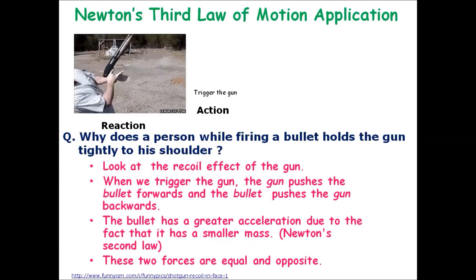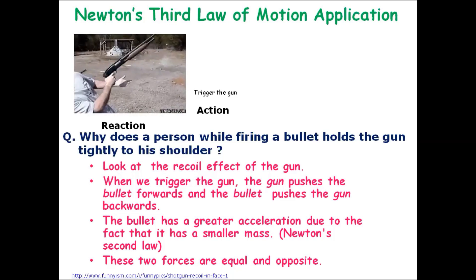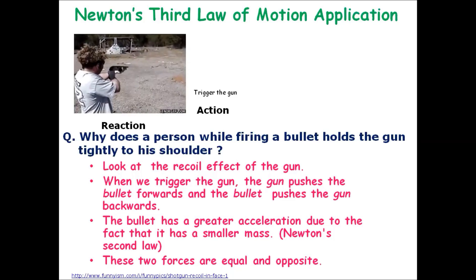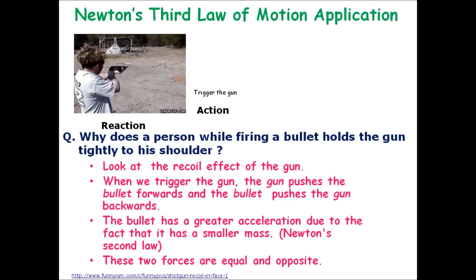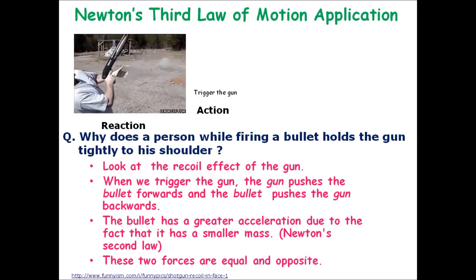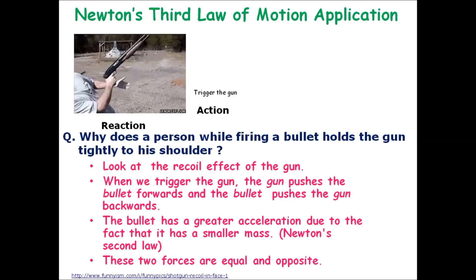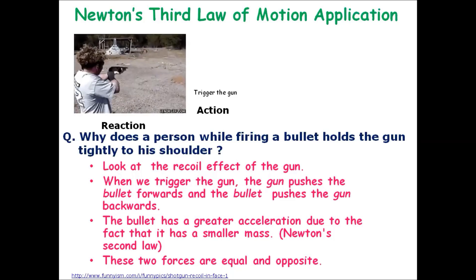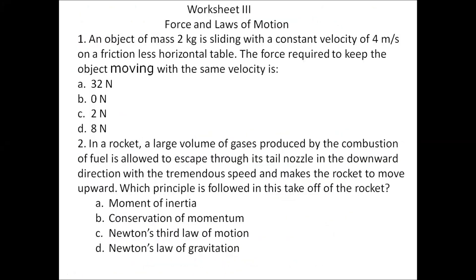Why does a person while firing a bullet hold the gun tightly to his shoulder? When we fire a bullet from a gun, the bullet moves forward with large force (that is action), and in turn it pushes the gun backward with the same force (that is reaction), also called recoil. If we do not hold the gun firmly, then it causes major injury to our shoulders. I am assigning you this worksheet which is based on today's lecture.